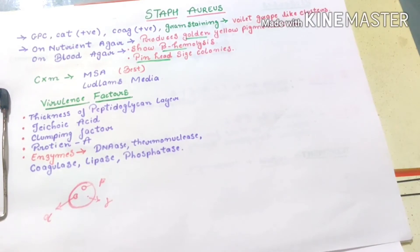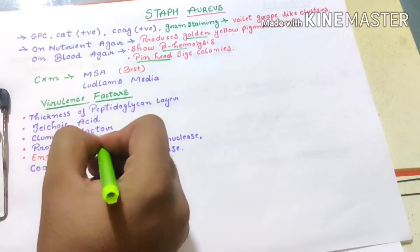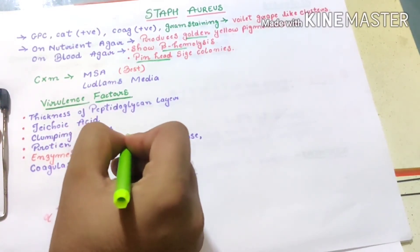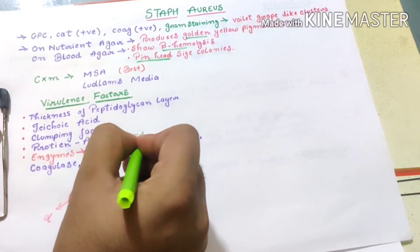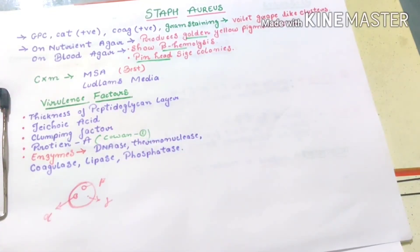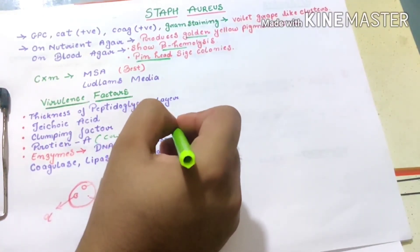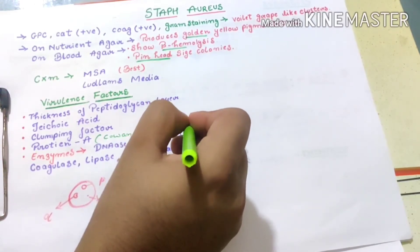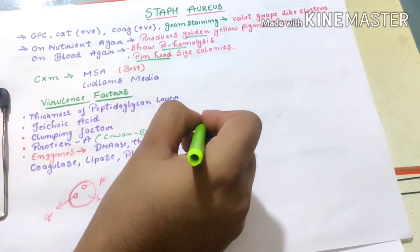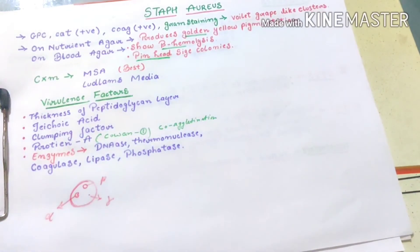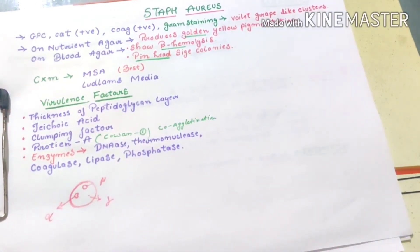Protein A is an exception. It is not found in all strains, it is only found in Cowan 1 strain of Staph aureus. It helps in co-agglutination process.